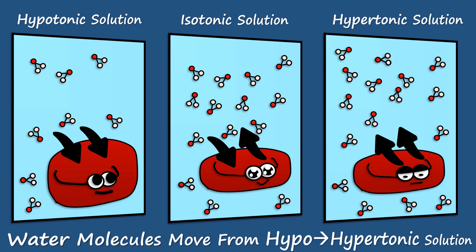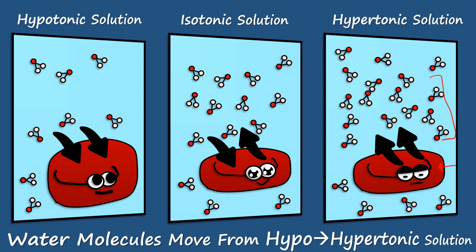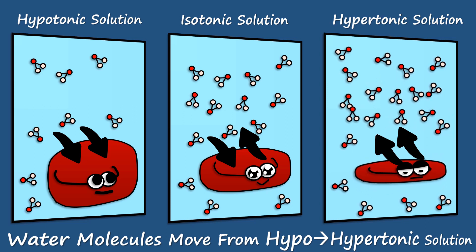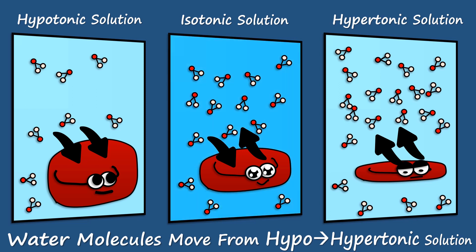Isotonic condition is the ideal condition in the case of RBCs. In a hypertonic solution, water molecules move from the hypotonic cell cytoplasm towards the hypertonic extracellular environment. Due to this, the cell shrinks. We do not want our RBCs to either swell or shrink, so the homeostatic systems in our body maintain this balance.